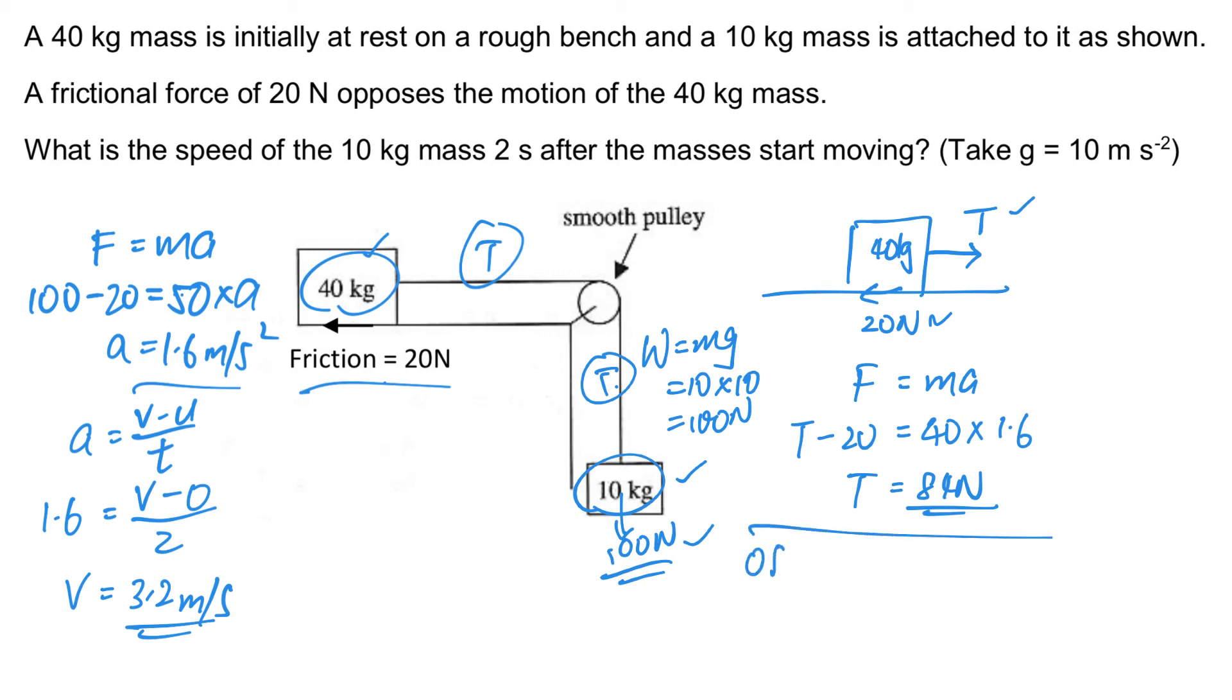Alternatively, if you want to use the free body diagram for the 10 kg mass, yes you can do that also. So that will be the 100 newton. F equals MA: as the 10 kg mass is moving down, the resultant force will be 100 minus the unknown tension equals the mass of the box, 10, times the acceleration 1.6. So if you solve it you will get the same answer, 84 newton. So that's how you solve this question.